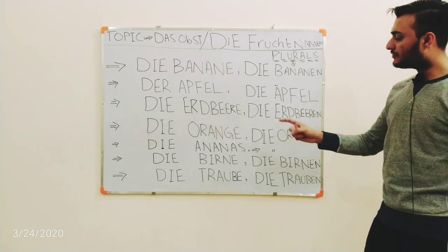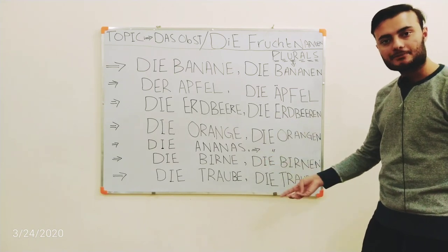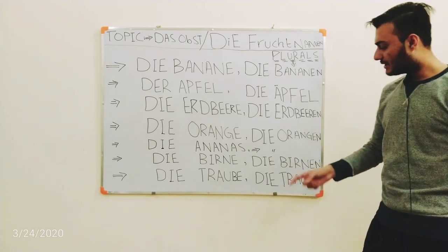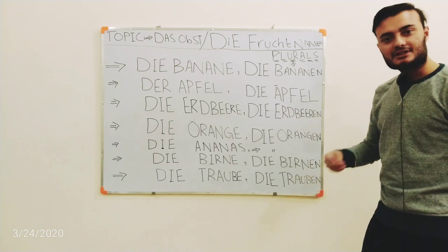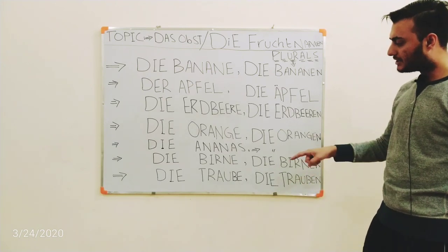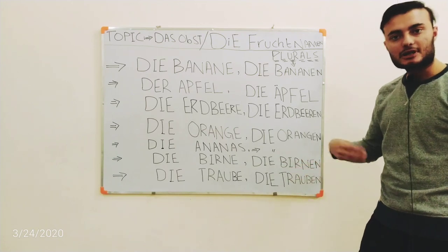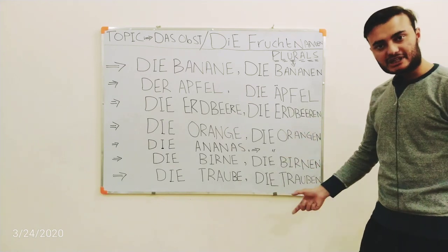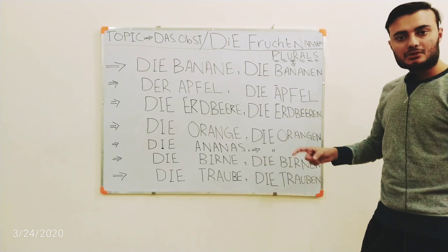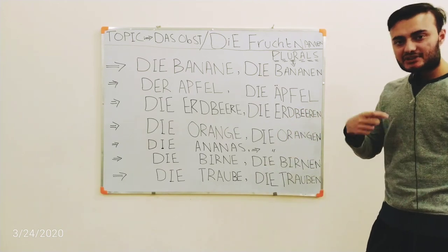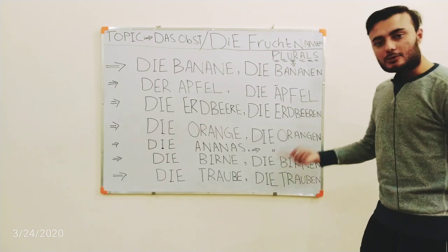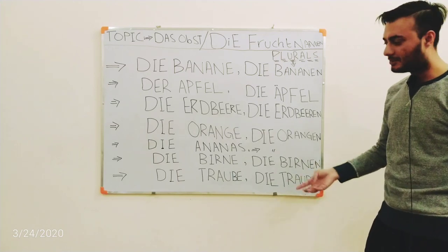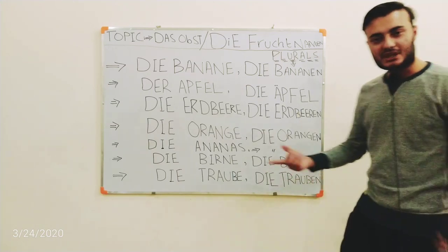Next one is 'die Traube' — the grape. Its plural will be 'die Trauben.' Note that in German, the 'e' ending becomes silent, but letters coming in the middle or start of a word give a sound. So 'die Traube' is the grape and 'die Trauben' is the grapes.